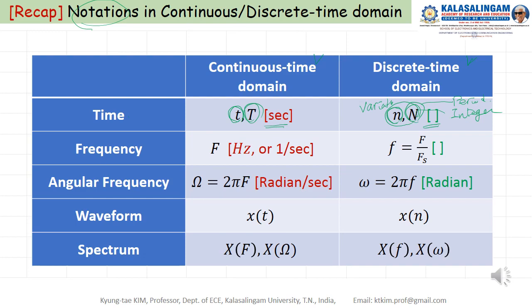And the frequency, uppercase F, Hertz or 1 by second. In case of discrete time, we use lowercase f. It is a normalized frequency by sampling frequency. Also, you can see here, no units. Angular frequency, omega equal to 2 pi F and omega equal to 2 pi f. In this case, the unit is radian. In this case, radian per second. Because this is radian, this is 1 by second.